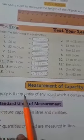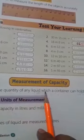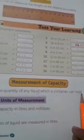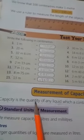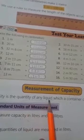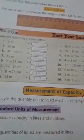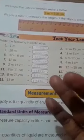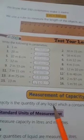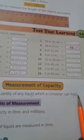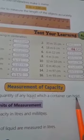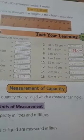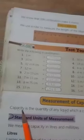Capacity is the quantity of any liquid which a container can hold. Capacity means quantity of any liquid. Liquid means water, milk and oil. These are liquids. So quantity of any liquid which a container can hold. Means a container, jo container hold kar sakta hai. That is called capacity.